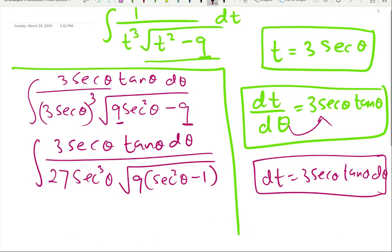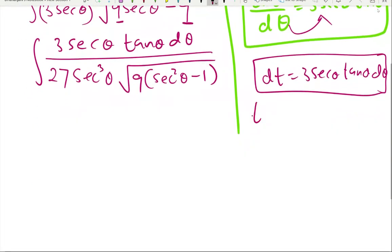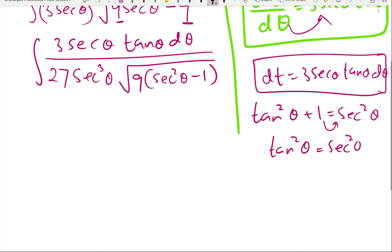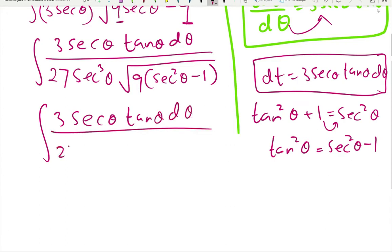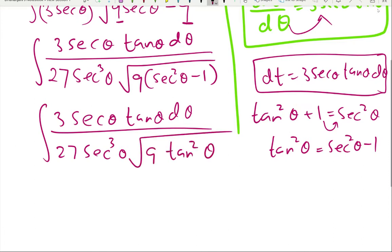Using the Pythagorean identity: tan²(θ) + 1 = sec²(θ), so sec²(θ) − 1 = tan²(θ). Therefore, sec²(θ) − 1 inside the square root is tan²(θ). Now let's take the square root — there are no additions or subtractions to block us.